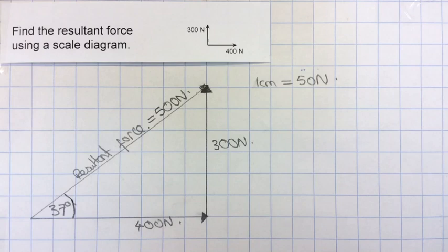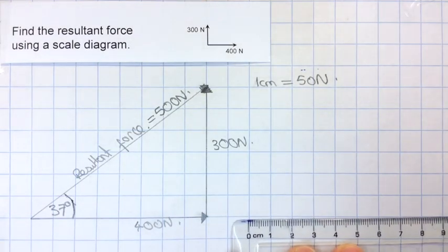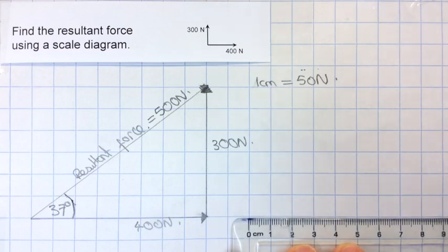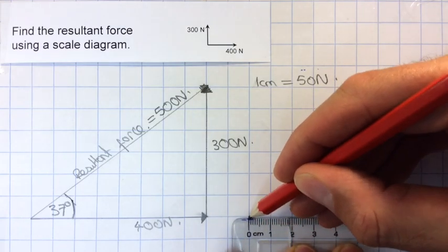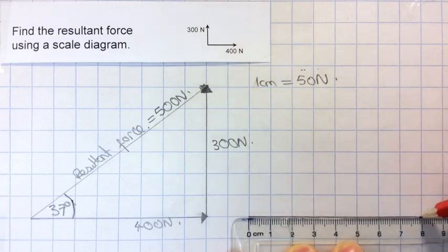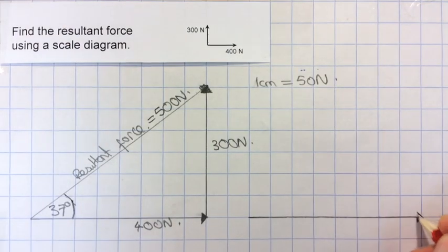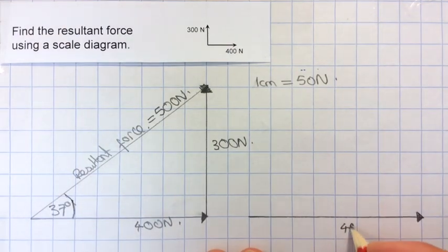That's now finished, but I'm going to show you the alternative method, the so-called parallelogram method. So for this one, I would do the same thing as before in drawing in my first vector, which will be the 400 newton one, which is going to be 8 centimetres again. And then I'll label that 400 newtons.